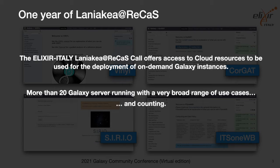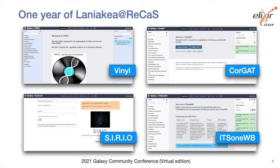We currently have about 20 running Galaxy instances, for example some public servers like Vinyl, which was presented here last year, CorGaft to align complete assemblies of SARS-CoV-2 genomes, or ETS-1 which has been accepted for publication and is dedicated to global taxonomic analysis of eukaryotic communities.